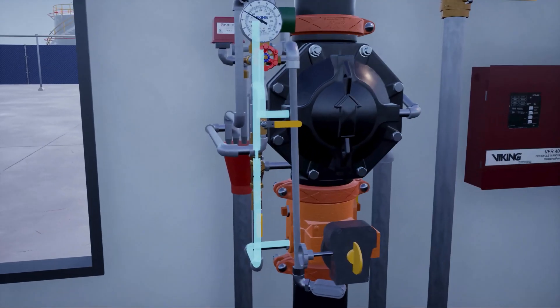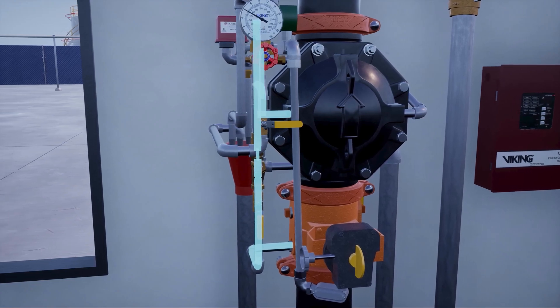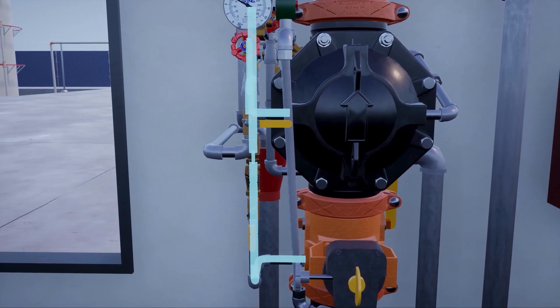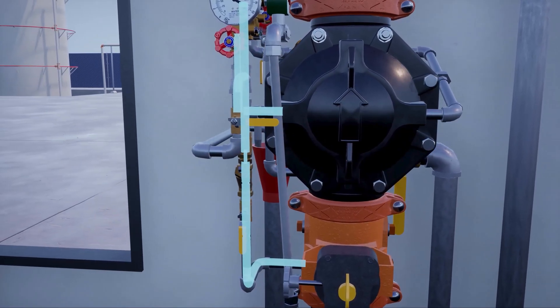The prime line directs water to the prime chamber of the deluge valve. The prime line consists of an open priming valve, a Y strainer, a restricted orifice, and a check valve.